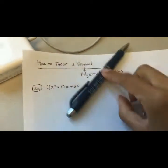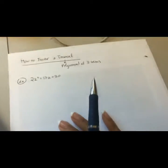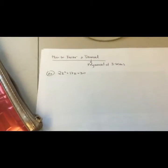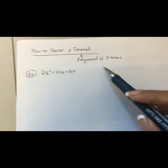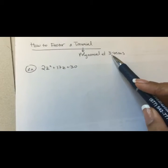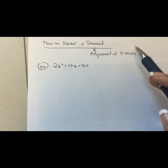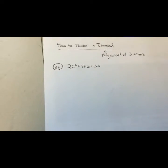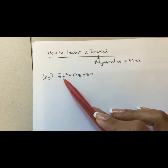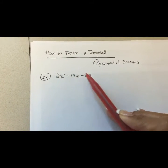The word trinomial means a polynomial with three terms, because 'tri' means three — think of a tricycle with three wheels, or triceratops. This method that I'm going to show you only applies to trinomials, so don't try this with a binomial or something with four or five terms. It has to have only three terms.